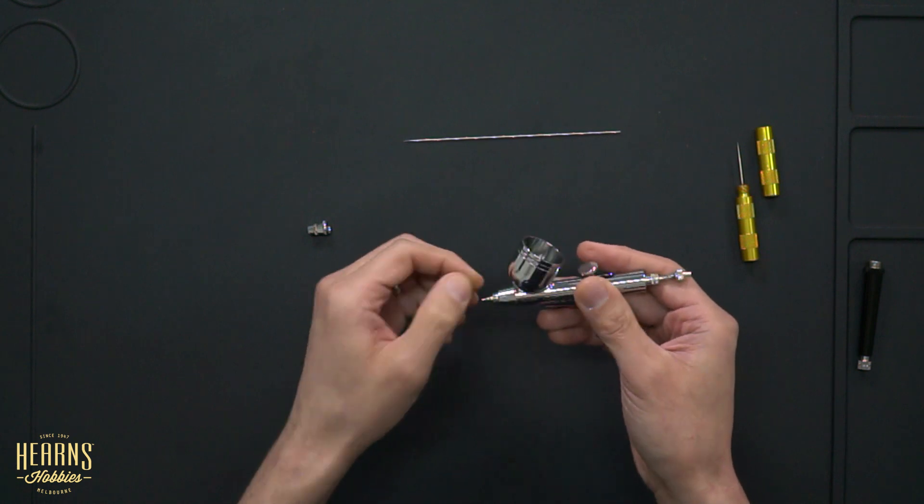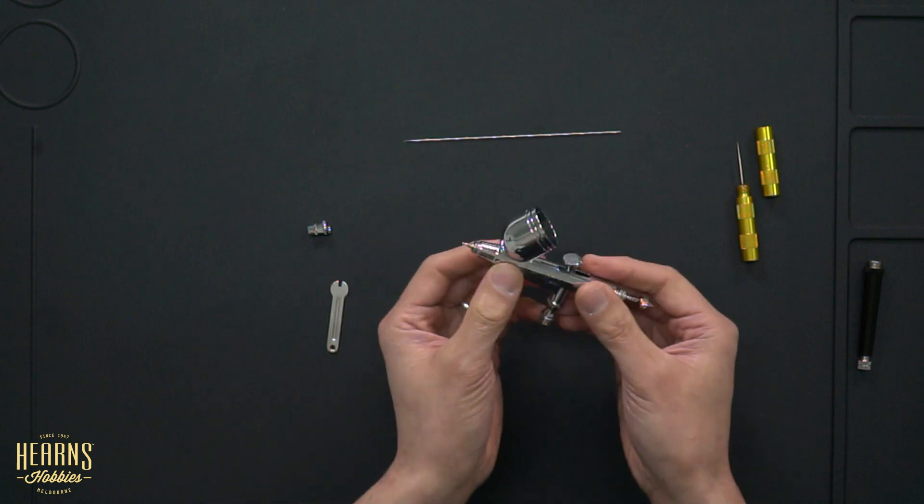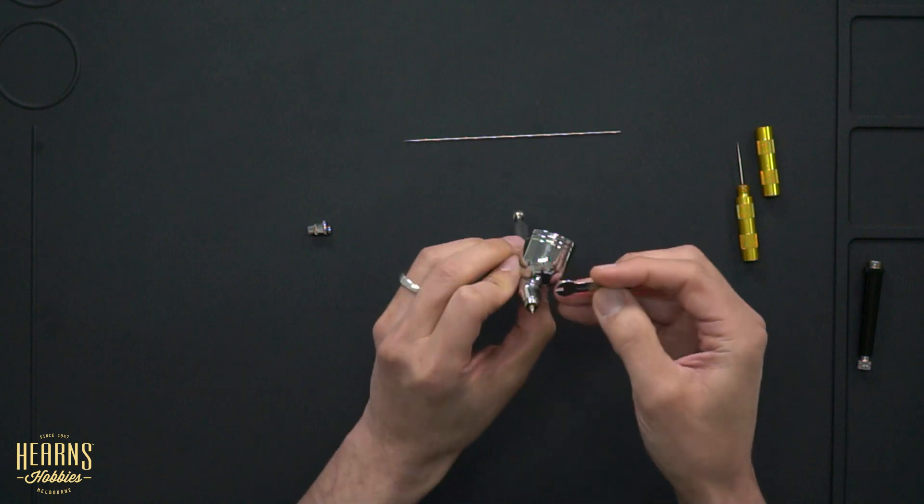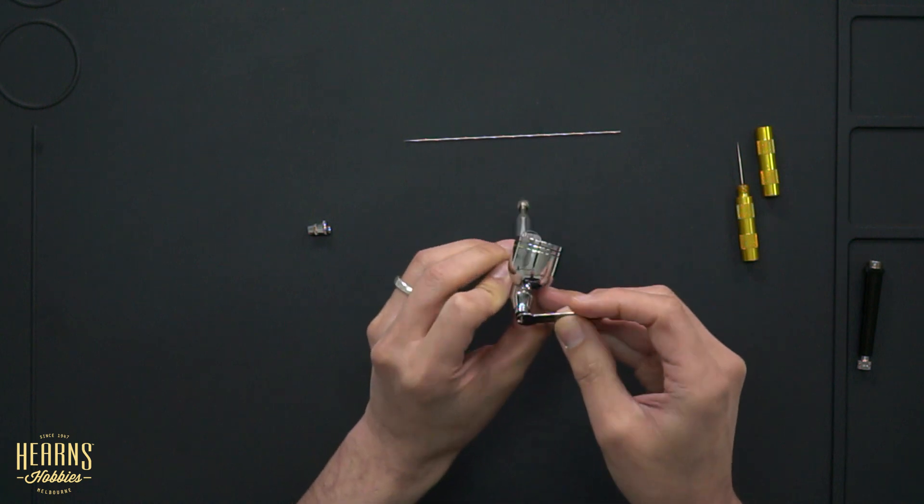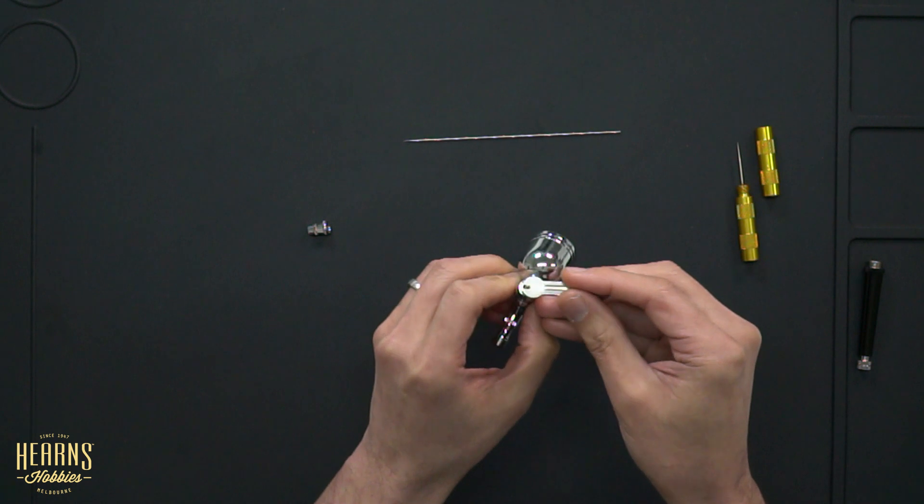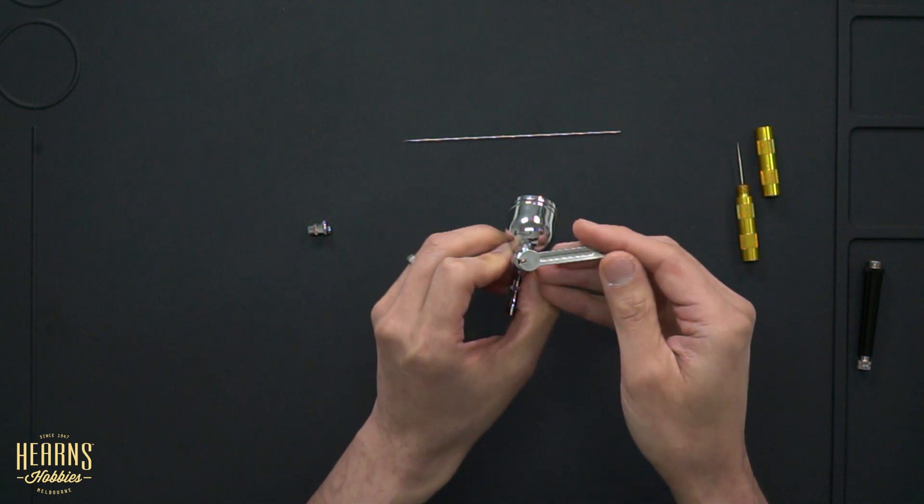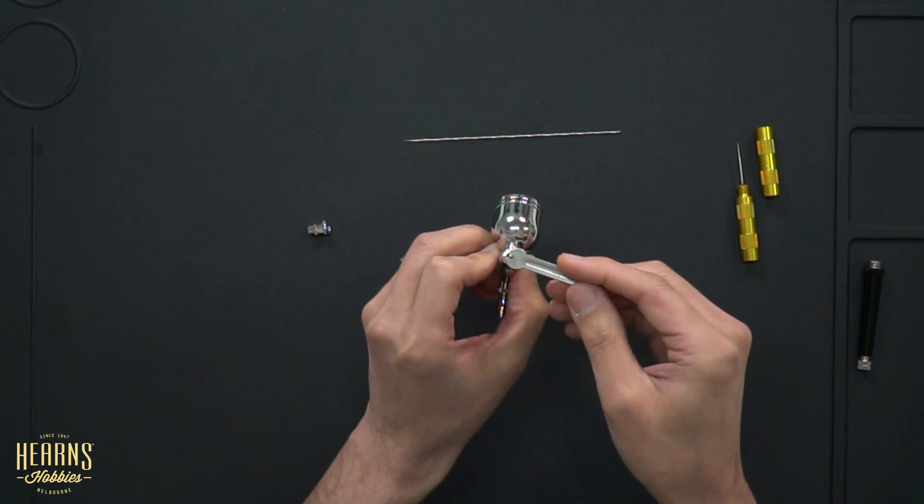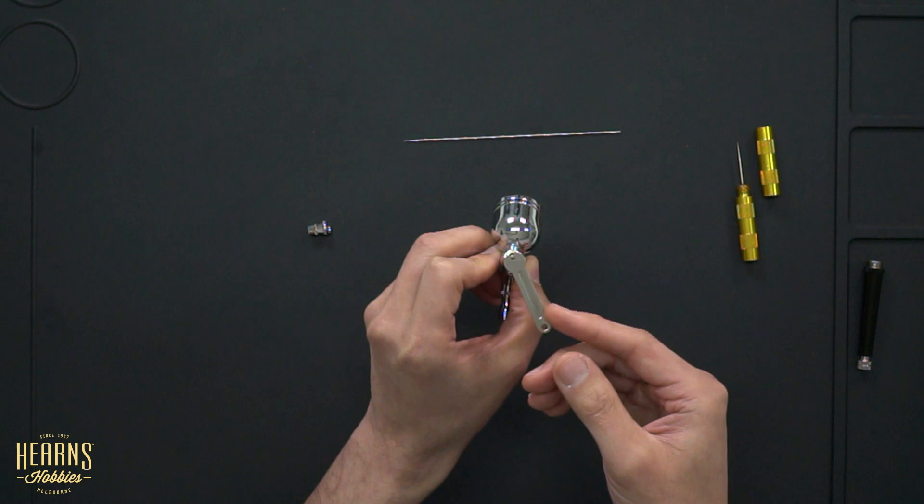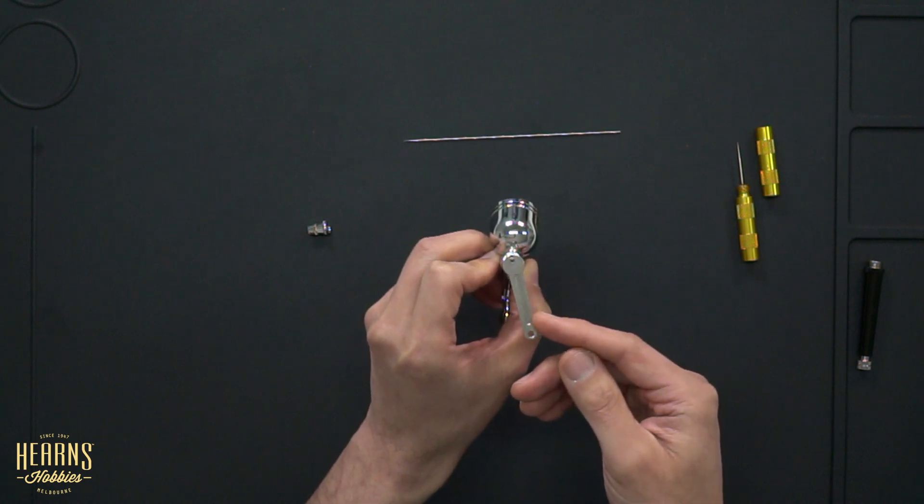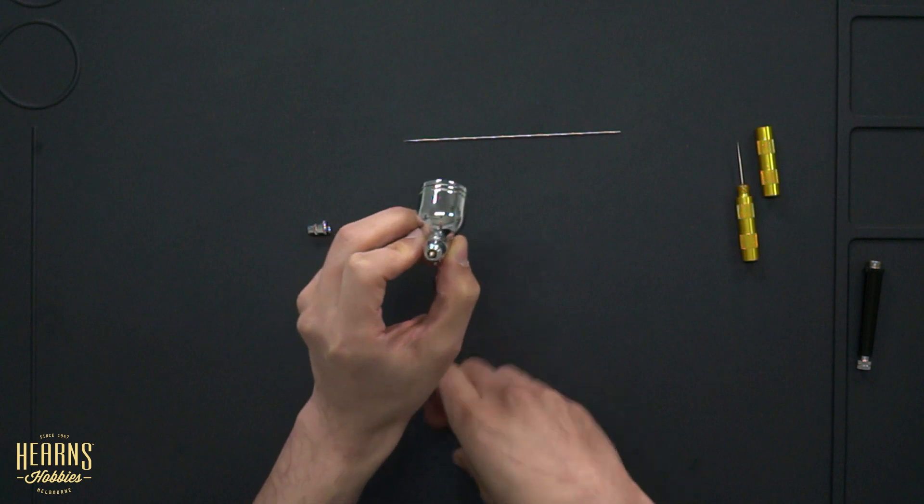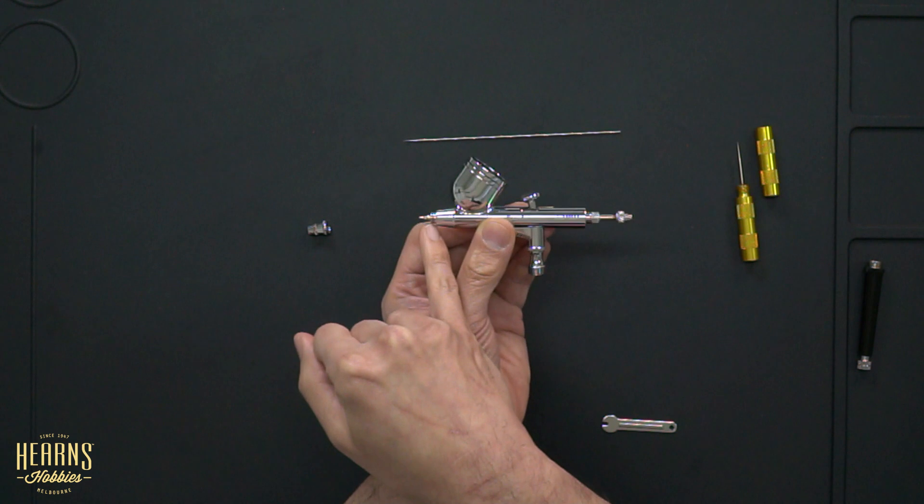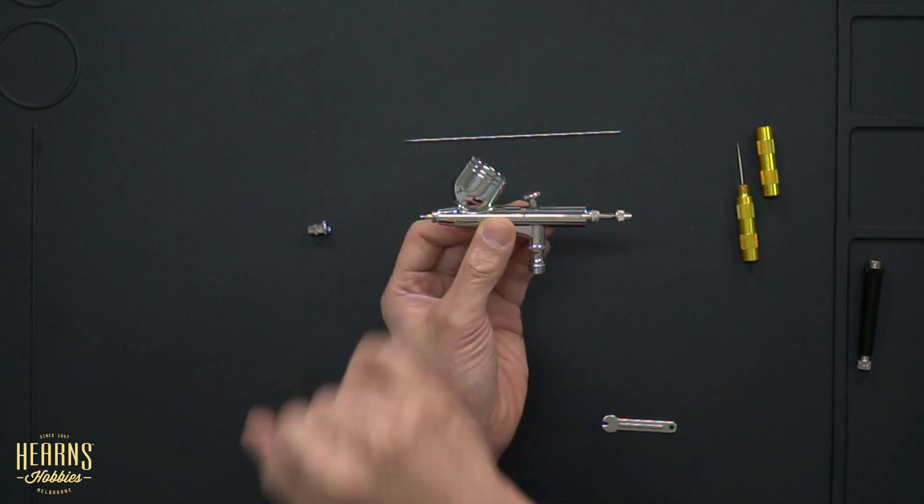So once you've done up your nozzle and it's finger tight, we just need to make sure it's tight enough so it doesn't come loose and it's airtight. So that's where you use your spanner. Just find the flat spot here. Now, just to tighten it up. So it's finger tight at the moment. We just want to turn it ever so slightly. I'm feeling resistance here now and just a little bit more, and that's tight enough. You don't want to over crank that because if you over crank, you'll break the threads. The threads will be stuck inside and you won't be able to get them out.